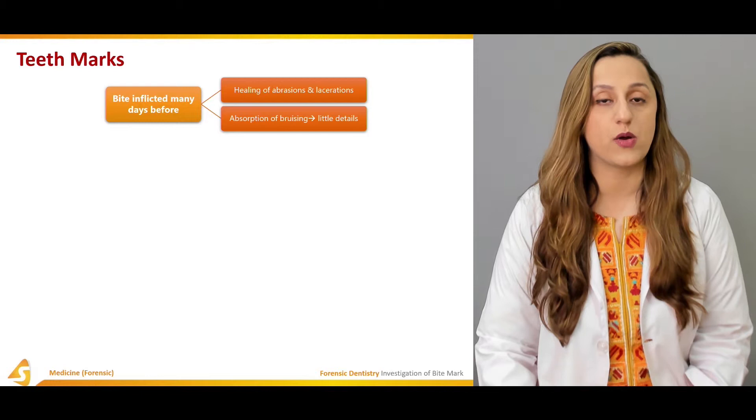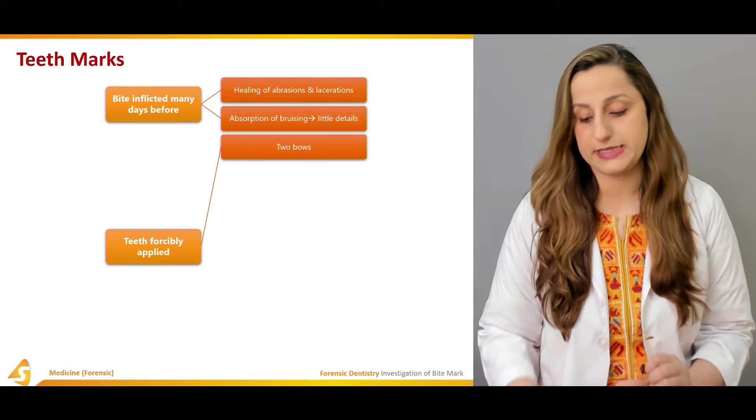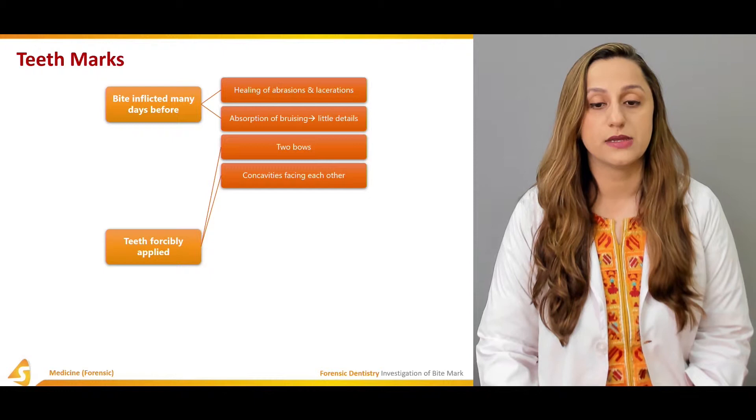If the teeth are forcibly applied, we'll have two bows that contain the complete structure of the dentition. The complete architecture of the dentition will be found in those bones.